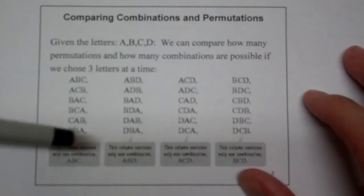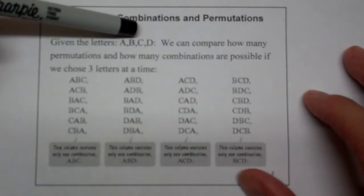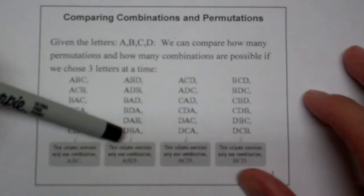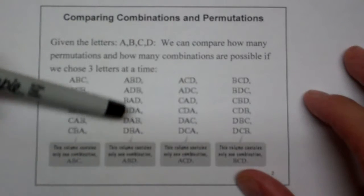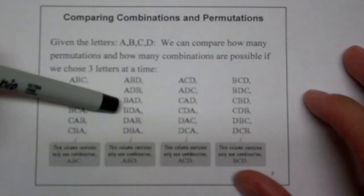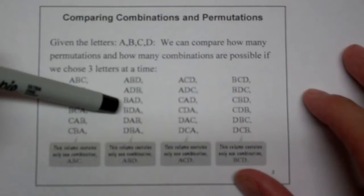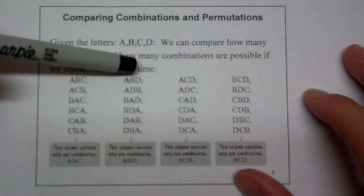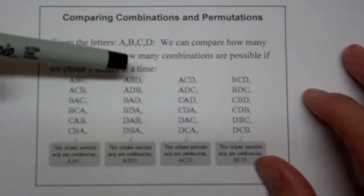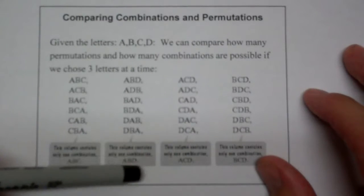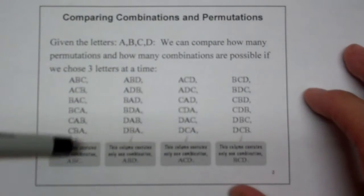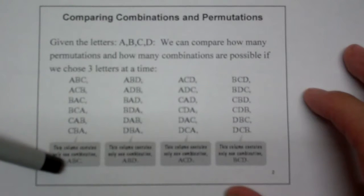What if you chose the first, second, and last letter? You get all of these permutations where the first column means something, the second column means something, and the third column means something — a rank ordering is what it means. But again, if you're just going to Grandma's house with your car, your teddy bear, and your flashlight, you can see there are way more permutations than there are combinations when order doesn't matter.